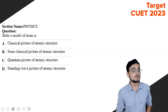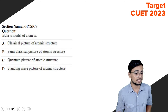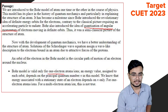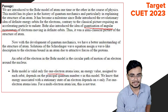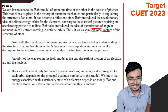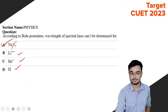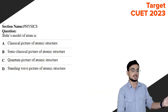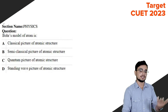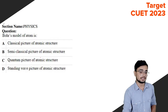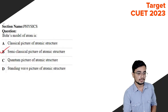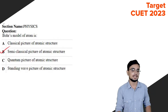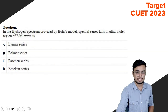Regarding Bohr's model of the atom, it is a semi-classical picture of the structure of the atom as stated in the passage. So the correct answer is: semi-classical picture of atomic structure.